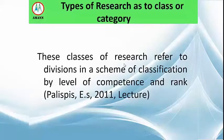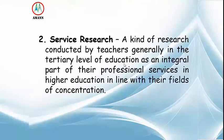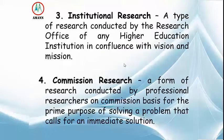Types of research as to class or category refer to divisions in a scheme of classification by label of competence and rank. Number one is training-oriented research — a form of research conducted by students in partial fulfillment of the requirements for a degree. Number two is service research — a kind of research conducted by teachers generally at the tertiary level of education as an integral part of their professional services in higher education. Number three is institutional research — a type of research conducted by the research office of any higher education institution in confluence with its vision and mission.